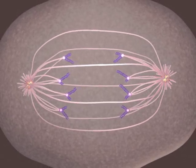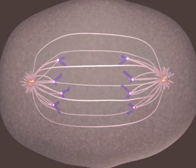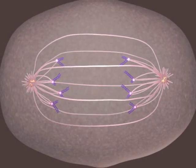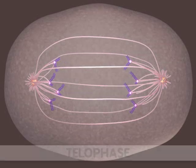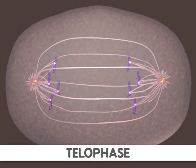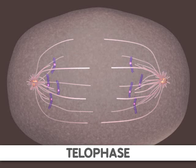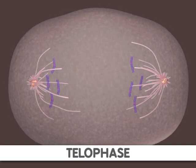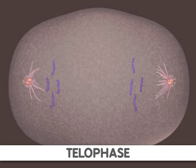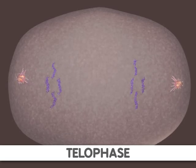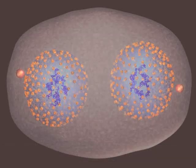Telophase is the final stage of mitosis. It is here the components of the new cells begin to appear. At this point, the spindle fibers are broken up. A new nuclear membrane surrounds the chromosomes at the end of each cell, and the chromosomes uncoil and return to an uncondensed state. Mitosis is now complete.